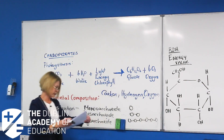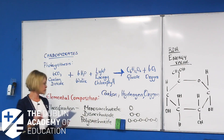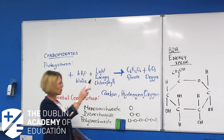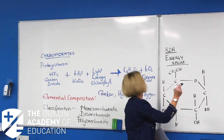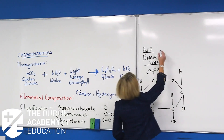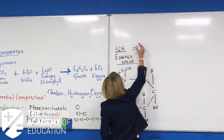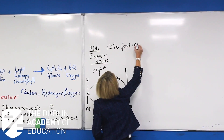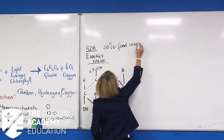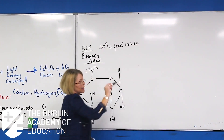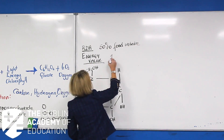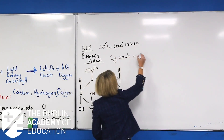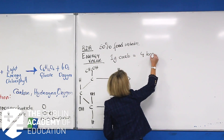We're going to look at the structure in a minute. Moving to the next board where we're looking at the RDA: for carbohydrates it's approximately 50% of food intake. The energy value is one gram of carbohydrate equals four calories of energy.